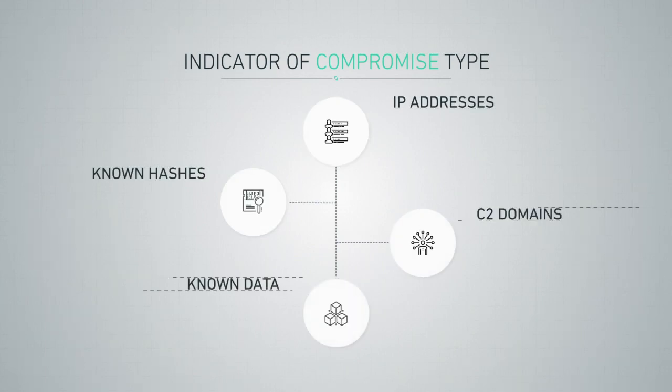When the product identifies malicious activity based on known hashes, IP addresses, C2 domains, or other known data, it is given an indicator of compromise type.